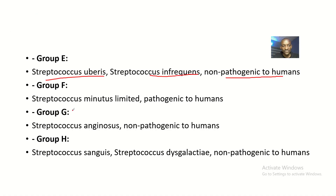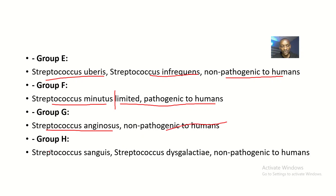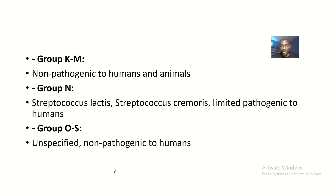In Group F we have Streptococcus minutus, which has limited pathogenicity to humans. Group G includes Streptococcus anginosus, which is non-pathogenic to humans. Group H includes Streptococcus sanguis and Streptococcus dysgalactiae, also non-pathogenic to humans.